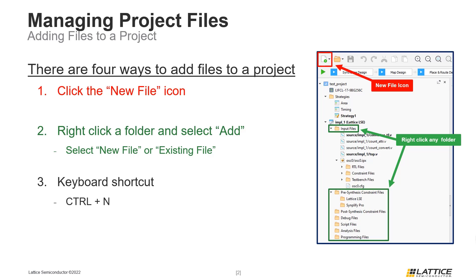The third way to add files to a project is using keyboard shortcuts. To do so, press Ctrl and then the End key on the keyboard. Doing this will also open the new file creation window. The fourth and final way files can be added to a project is using the drag and drop method, meaning that files can be selected in a file explorer window and dragged directly to the File List tab. Depending on the extension of the file being added, it will be sorted to one of the existing folders in the File List tab.